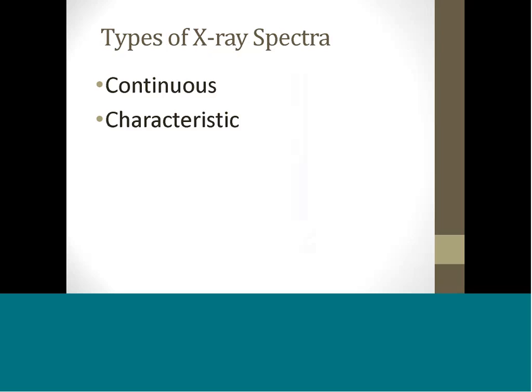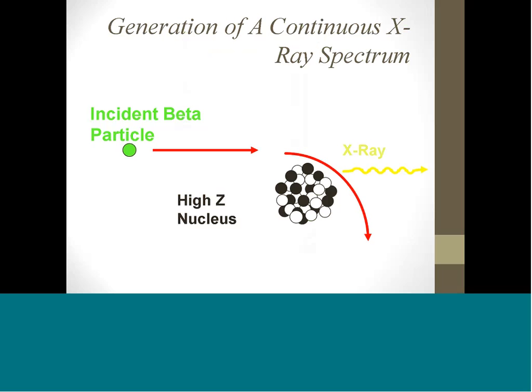There are two types of X-ray spectra: continuous and characteristic. The continuous spectrum consists of radiations of all possible wavelengths within a certain range, whereas the characteristic spectra consists of definite wavelengths superimposed on the continuous spectrum. A continuous spectrum is generated when a high-velocity electron passes close to the nucleus of an atom within the target of the X-ray tube. The electron is slowed down, and during the slowing down process emits a pulse of energy. Since the electron suffers all sorts of collisions, the energy of the emitted X-rays also vary. Hence, the X-ray spectra shows all possible wavelengths within a certain range.